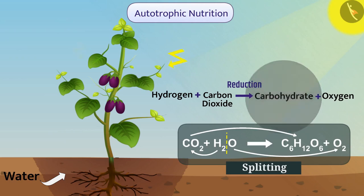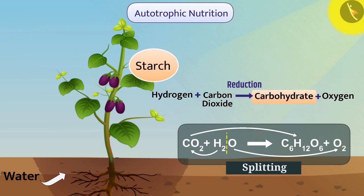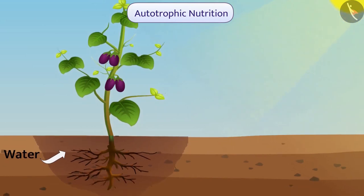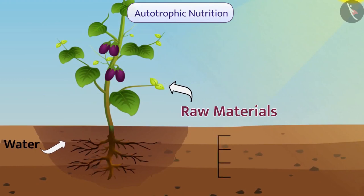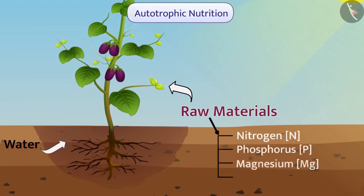Organisms get energy from carbohydrates. In the form of starch, carbohydrates are stored in the leaves or in different parts. Along with energy, autotrophic organisms also need some other raw materials to maintain their body, such as nitrogen, phosphorus, magnesium, iron, and other substances which are obtained from soil.